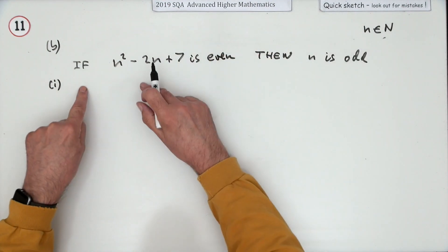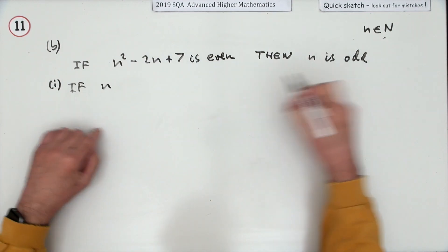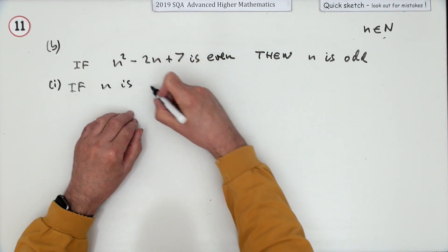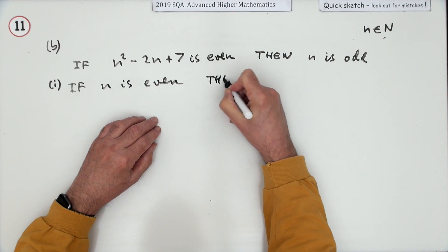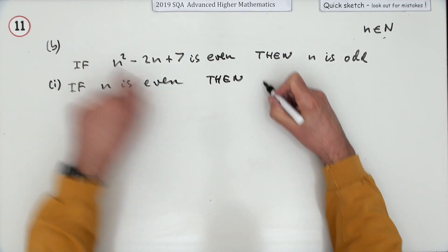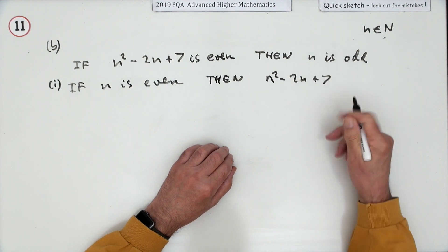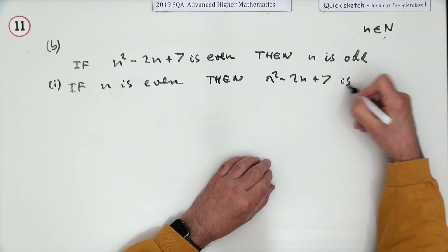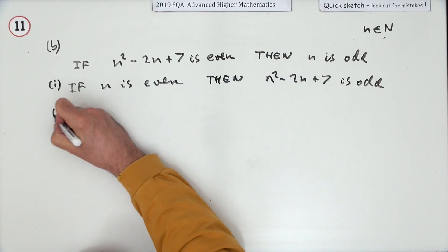So this statement here, you'd write that first: if n is not odd, or you could reinterpret that as if n is even, then n²-2n+7 is not even, which is what you're meant to write, but you can reinterpret that as is odd. That would be the contrapositive.